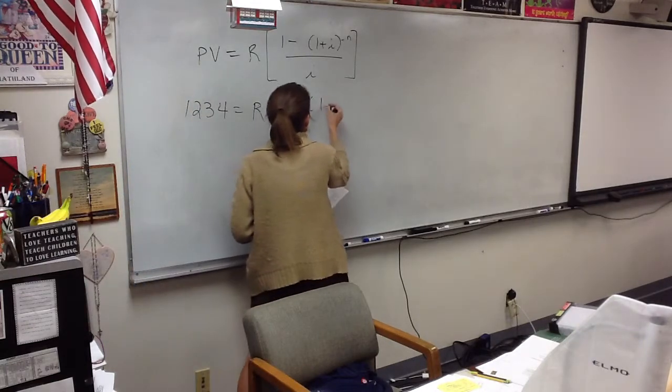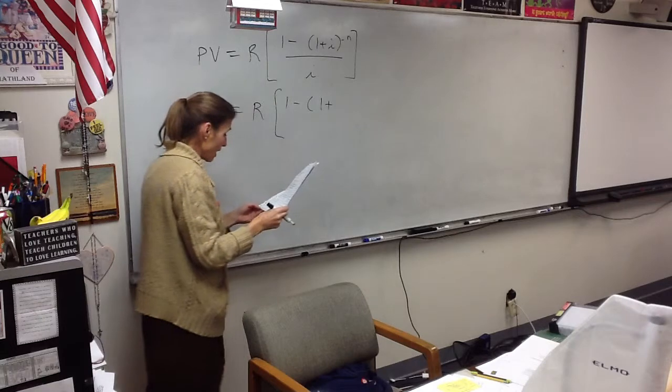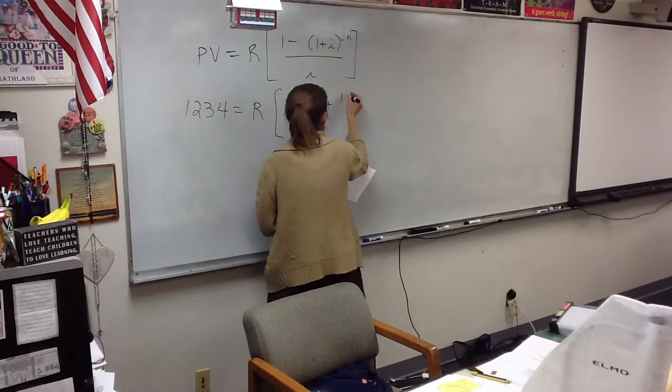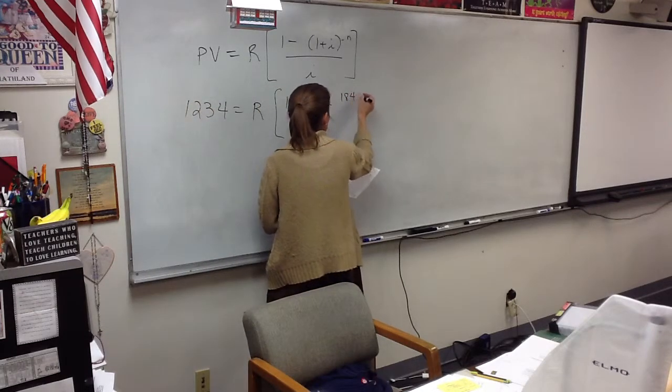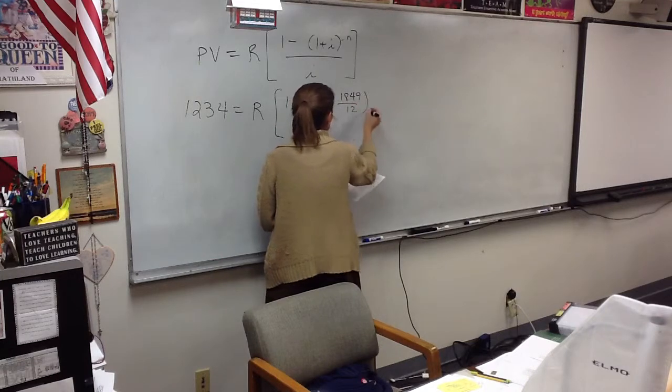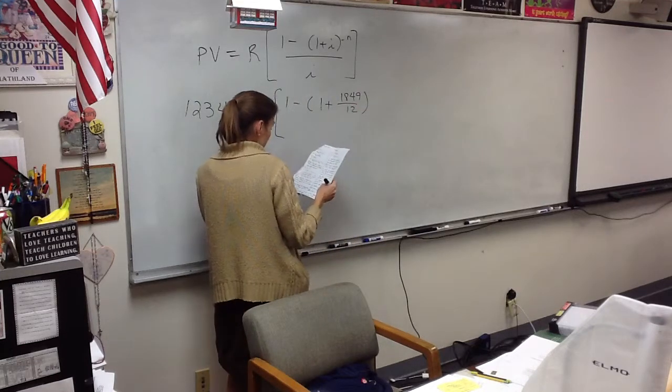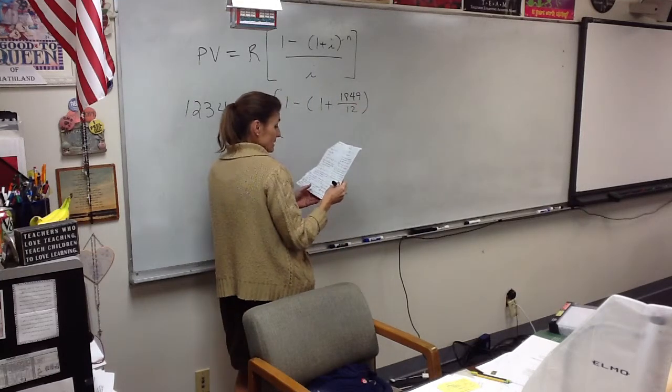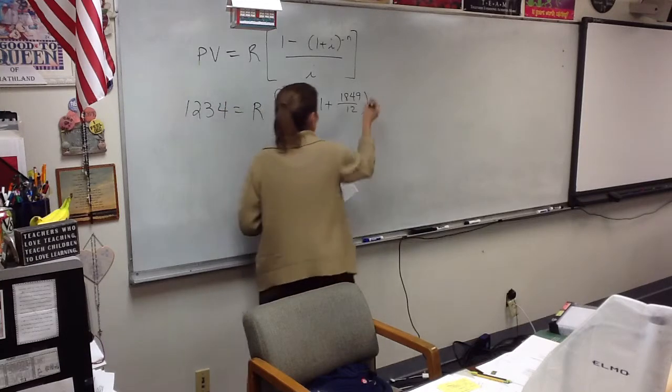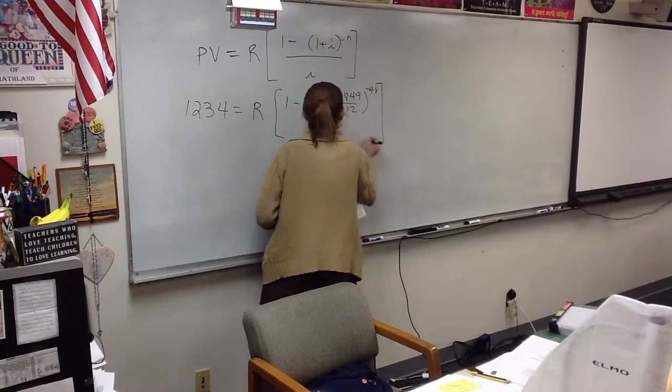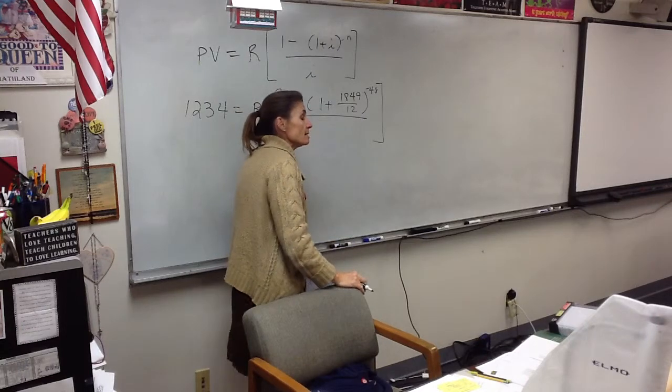So, 1 minus 1 plus, what do I put in for I? 0.1849. 0.1849 by 12. Okay. And what power am I raising it to? Negative 48.